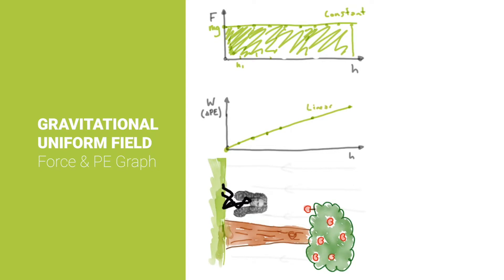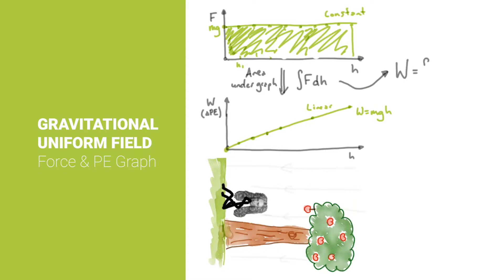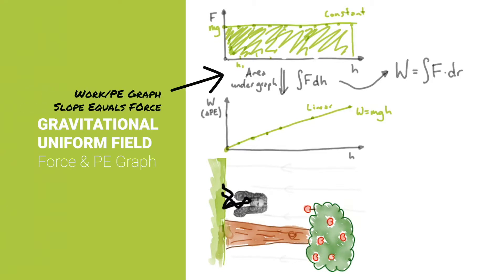For force versus h, we get a constant graph, and for work versus h, we get a linear graph where work is proportional to h, and mg is just a constant. Going from force to work or potential energy, we actually integrate that graph — it's the area under the graph or the integral of the force over the distance. Going back the other way, the slope of the work or potential energy graph will actually equal the force. So if work equals mgh, the slope of the graph is just mg.